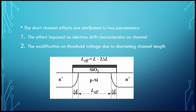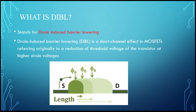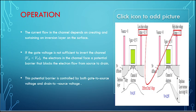What is DIBL? What causes DIBL? Drain Induced Barrier Lowering is a short channel effect in MOSFET. This originally reduces the threshold voltage of the transistor at high drain voltages. As the length of the channel increases, the threshold voltage of the transistor decreases originally.